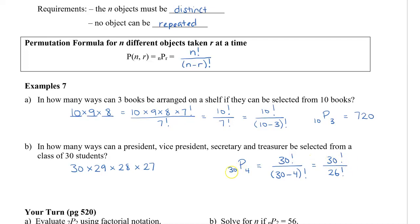If you expand this, you'll notice that this is going to be 30 times 29 times 28 times 27 times 26 factorial, all divided by 26 factorial. If the 26 factorials cancel, you'll notice that these four numbers are the same four numbers that we have over here. So when we multiply these out, we get 657,720.